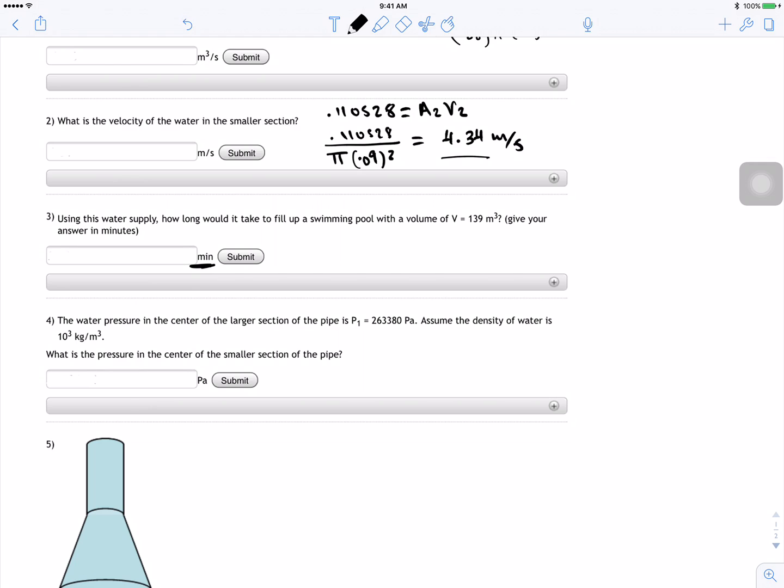So using this water supply, how long would it take to fill up a swimming pool with a volume of V equal 139 meter cubed? So they want in minutes too. 139 meter cubed, and then what I did is just unit manipulation by 0.11052, and this is meter cubed per second, right?